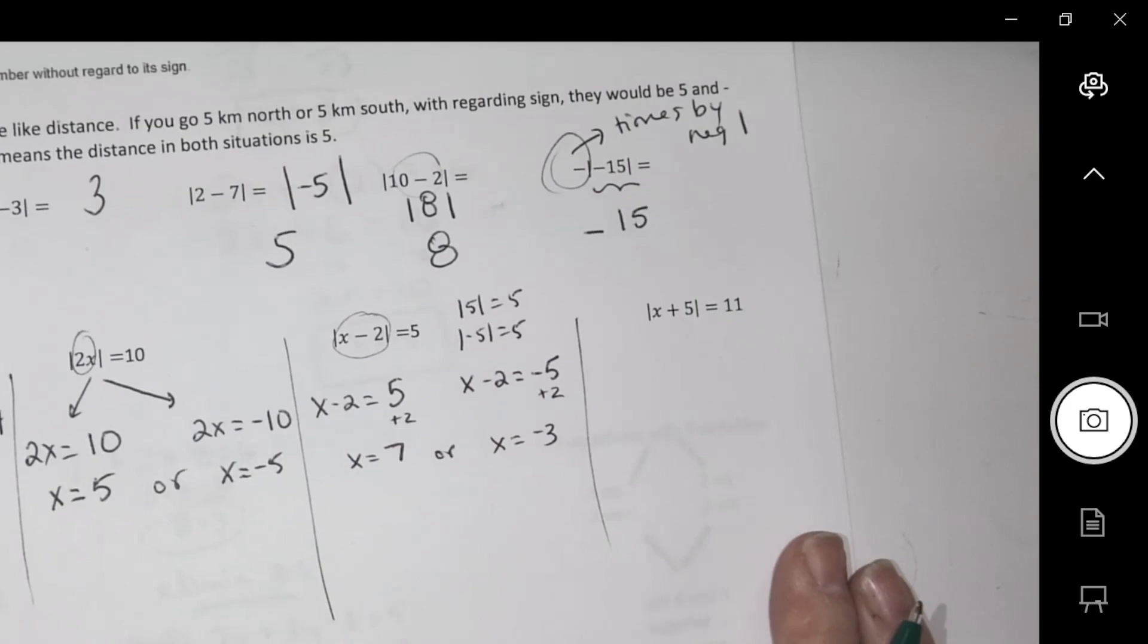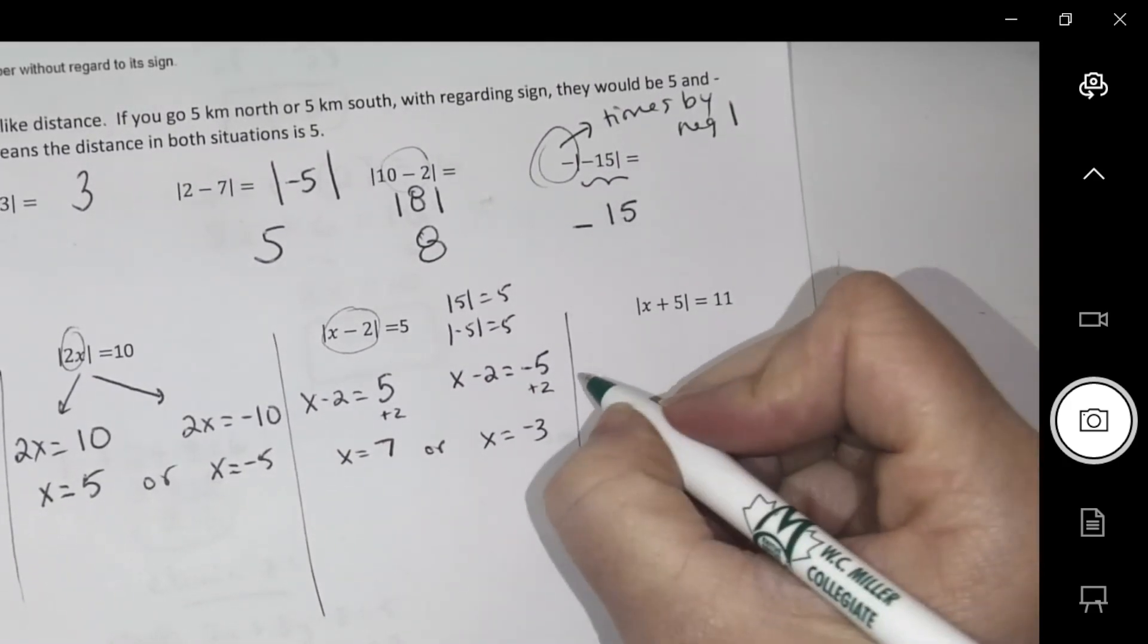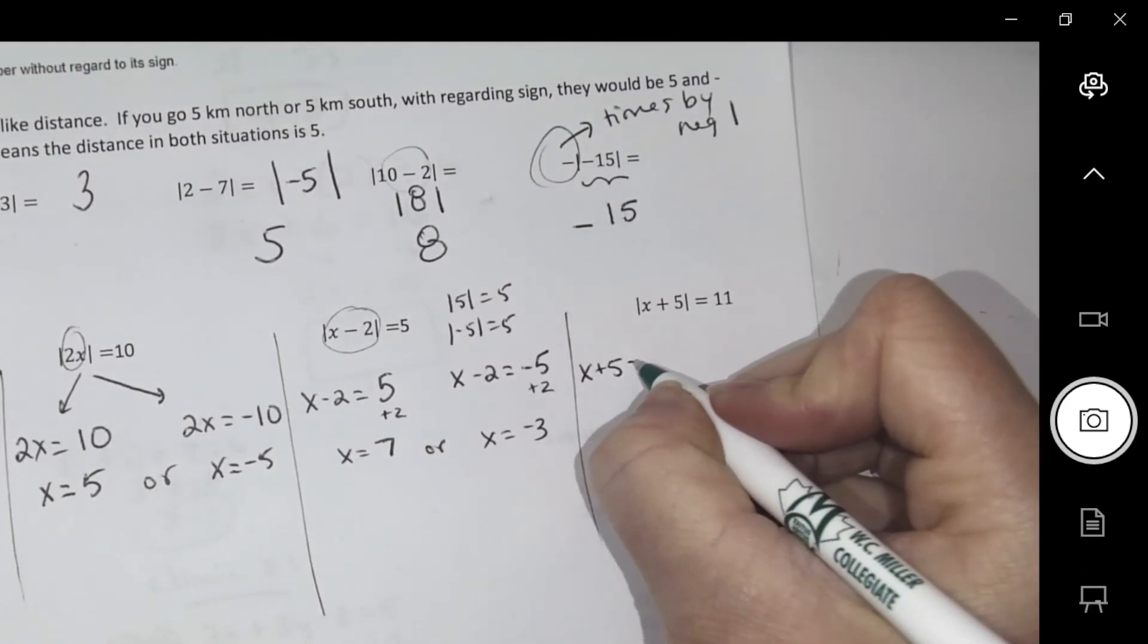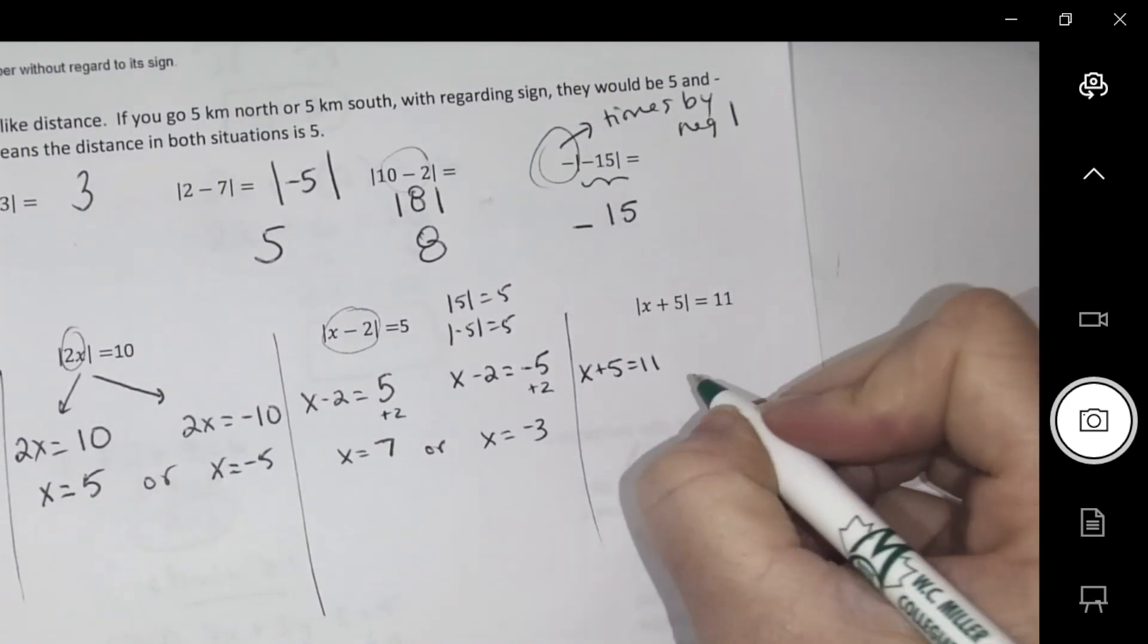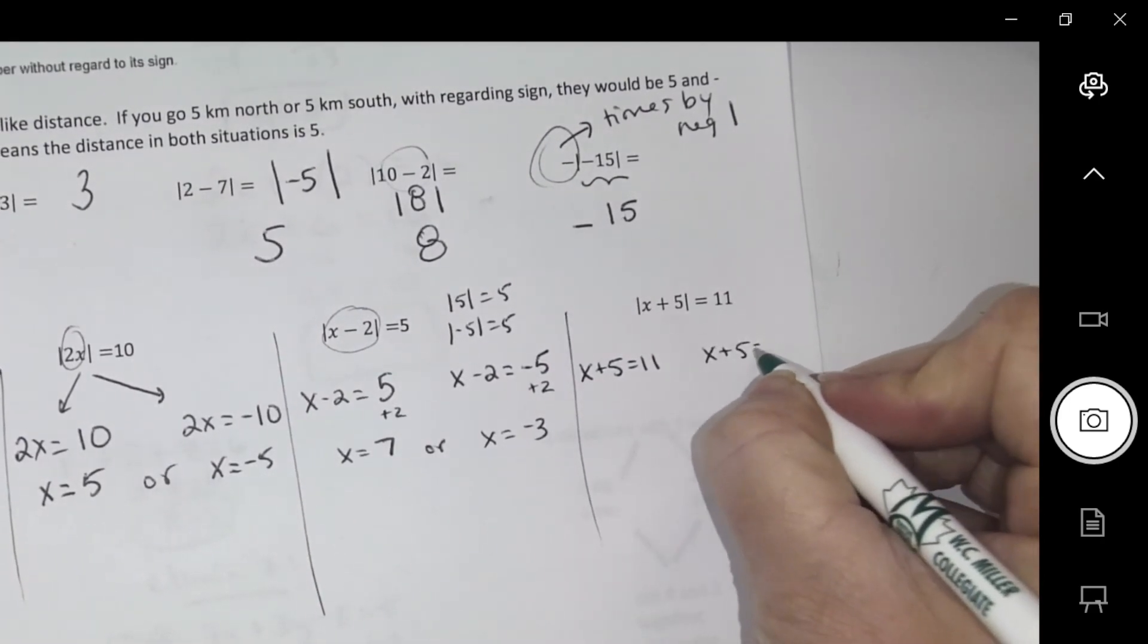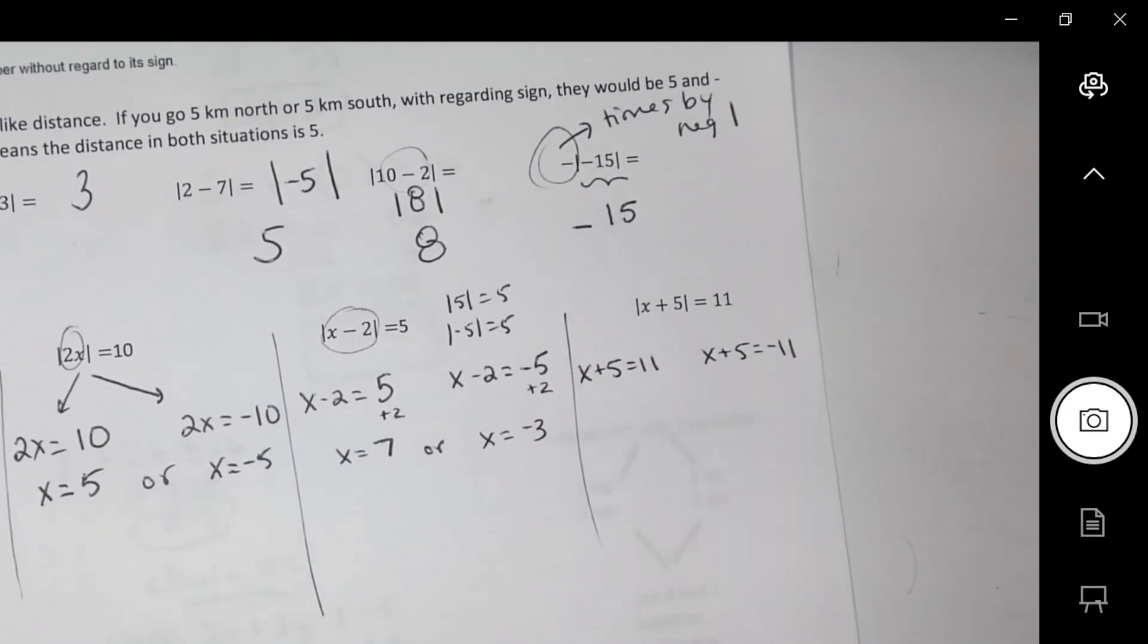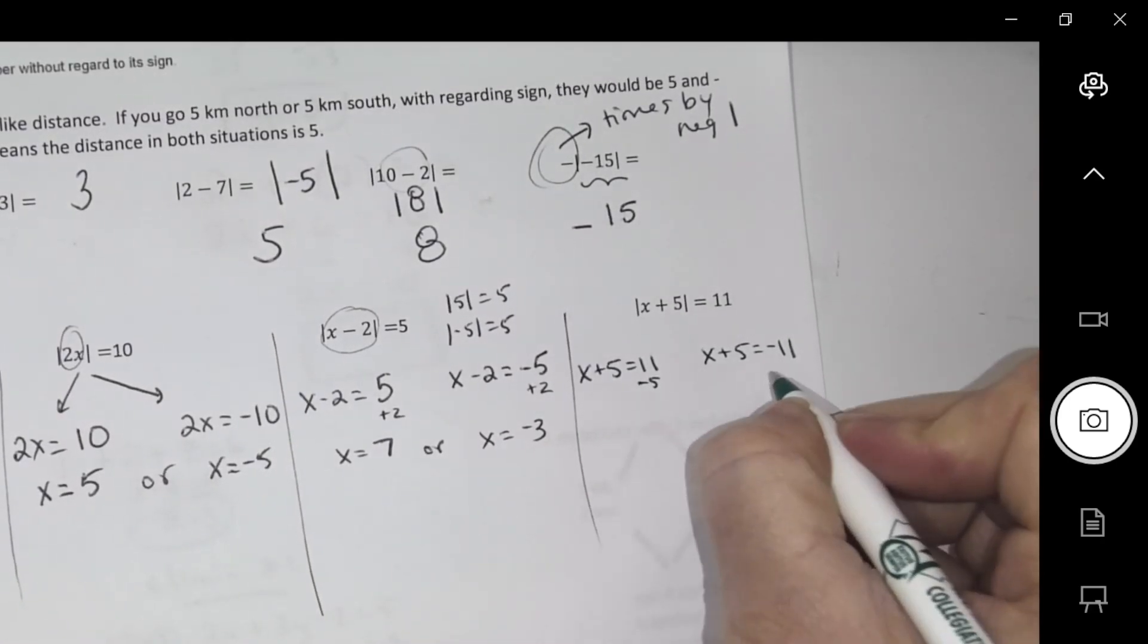Next one. I'm going to set it up. The inside of the bracket could have been 11, or the inside of the bracket could have been negative 11. Give me two x values using your algebra skills. You're going to be minusing a 5.